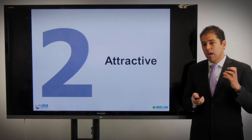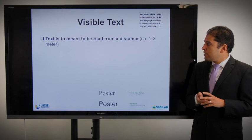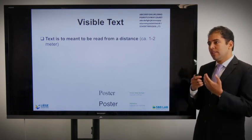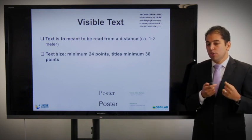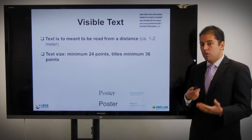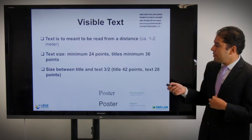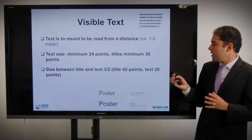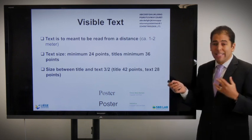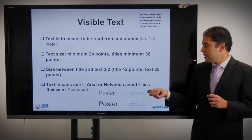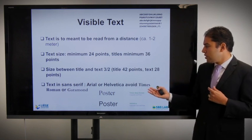Number two: how to do an attractive poster. First, visible text — text is meant to be read from a distance. Keep in mind that a poster is read from a distance of one to two meters, so the font size is very important. Use a minimum of 24 points; the title minimum 36 points — if more, then better. Never write anything less than 24 points. The title can be 42 points and text headings 28 points. For text, use sans-serif fonts — Arial is recommended. Avoid Helvetica, Times New Roman, or Garamond.